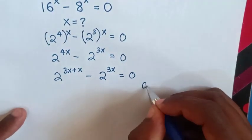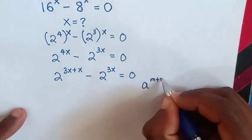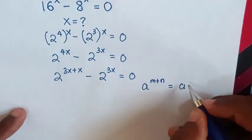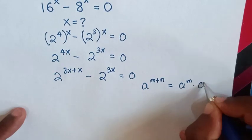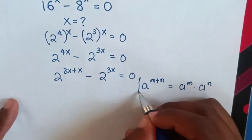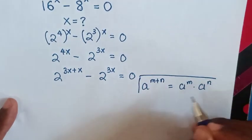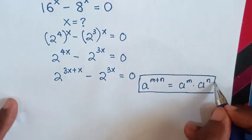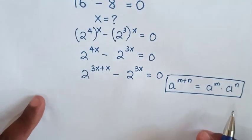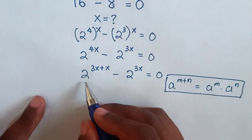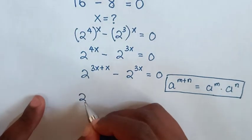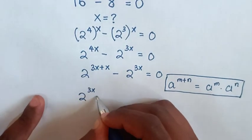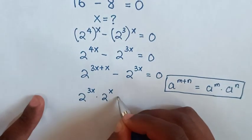Then in here we will apply this exponential rule which is a^(m+n) = a^m × a^n. So in here it will be multiplication of exponent which is 2^3x × 2^x minus this 2^3x is equal to 0.